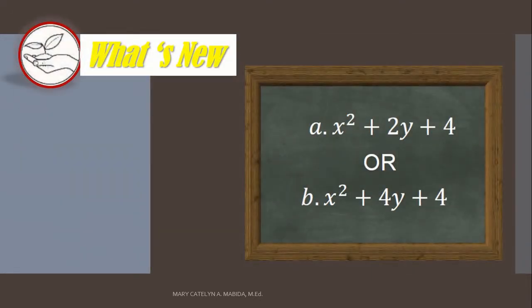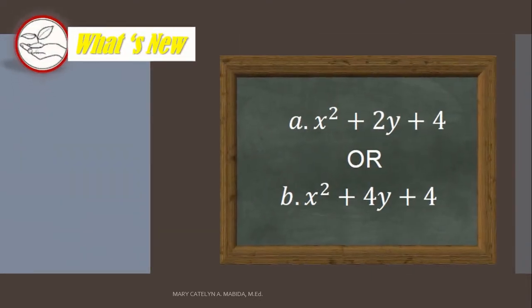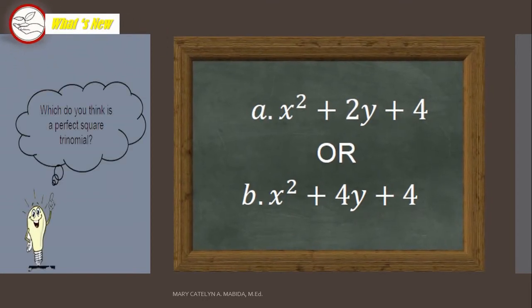What's new? Which do you think is a perfect square trinomial? Is it A, x squared plus 2y plus 4, or B, x squared plus 4y plus 4? That is what we are going to learn today. So, keep on watching to find out.